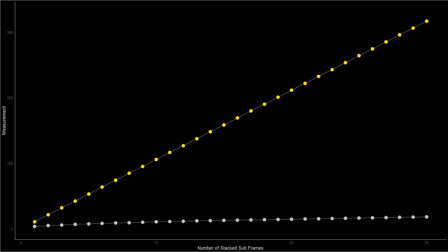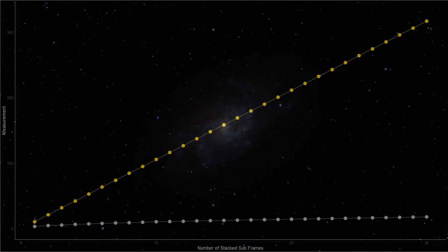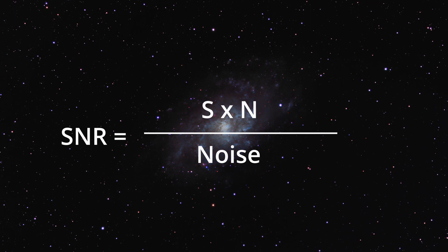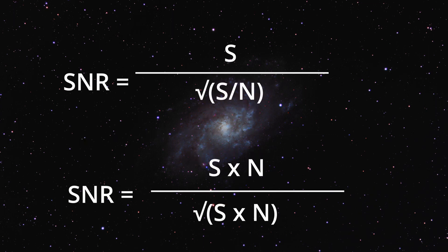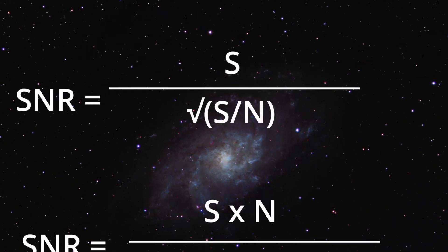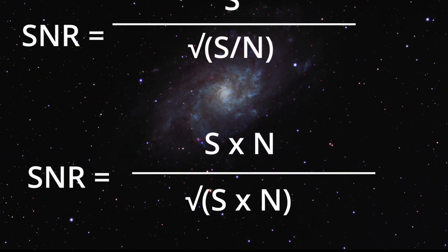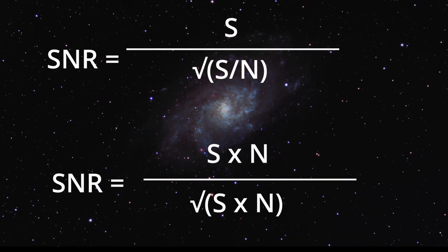So we can make a signal-to-noise ratio equation out of this, which is signal-to-noise ratio equals the signal times the number of subframes, all divided by the square root of the number of subframes times the signal. Nice. This is probably the explanation that most of you have heard in astrophotography. It's easy and simple to understand. Okay, we've got two equations. One assumes that the spread of the Poisson distribution is noise, and the other assumes that it is just part of the signal. Which one is correct? Look closely. Do you see any differences between them?